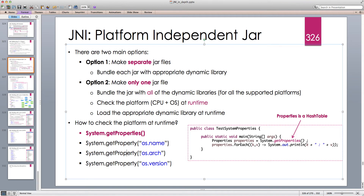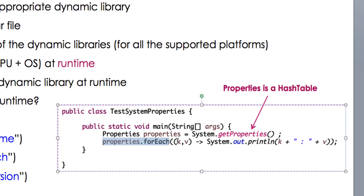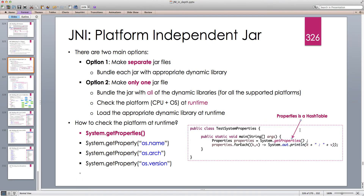System.getProperty('os.arch') gives us the architecture of the operating system — whether it's 32-bit or 64-bit. System.getProperty('os.version') lets us check the OS version; for example, if we don't want to support macOS 10.9 or 10.10, we can filter by version. On Windows 10, it gives the version string. You can also iterate through all properties using System.getProperties().forEach(), which takes a key-value pair — this is the internal iterator of the HashMap using a Consumer interface.